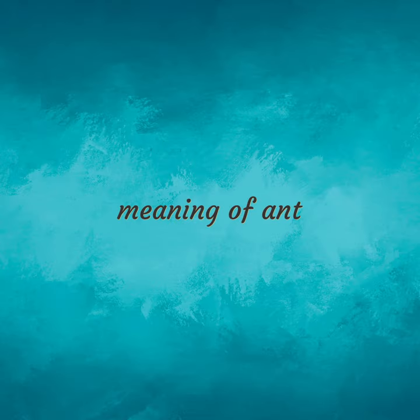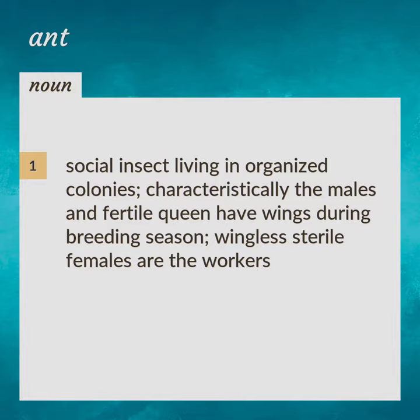Meaning of Ant: A social insect living in organized colonies. Characteristically, the males and fertile queen have wings during breeding season. Wingless sterile females are the workers.